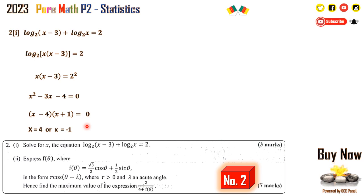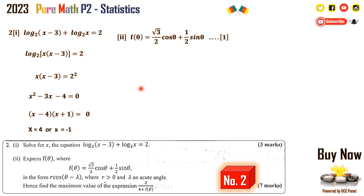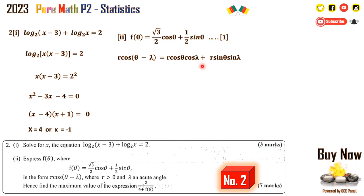For Sub 2, express f of theta where f of theta equals root 3 over 2 cos theta plus a half sine theta in the form r·cos(theta − lambda), where r is positive and lambda is an acute angle. So f of theta equals root 3 over 2 cos theta plus a half sine theta. This is identical to expanding r·cos(theta − lambda), which gives r·cos theta·cos lambda plus r·sin theta·sin lambda — note that for cos(A − B) you get a plus sign at that position.